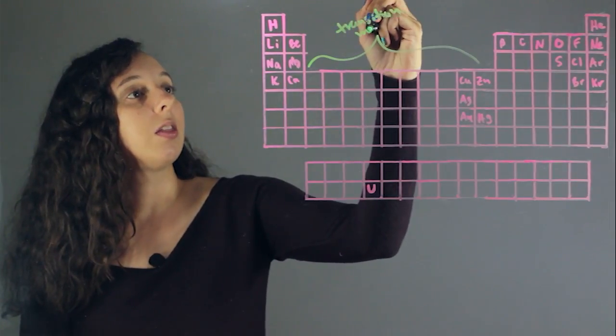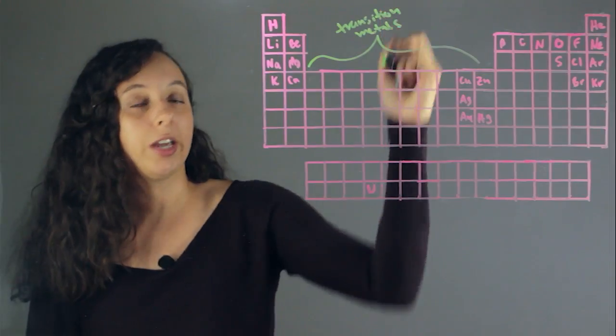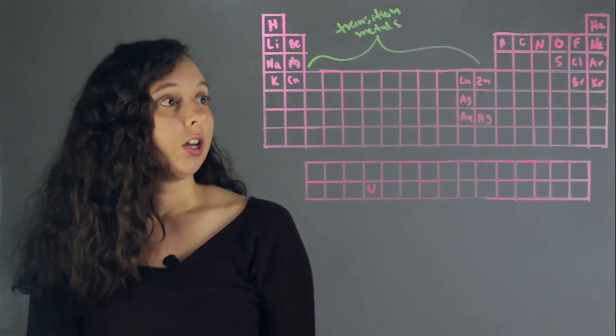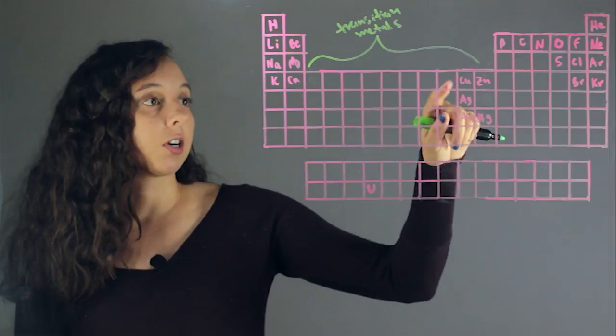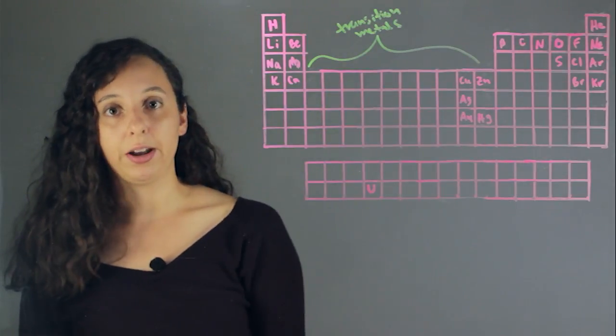And these are all the metals that we kind of associate in everyday life with being metal. So you have zinc, mercury, gold, silver, copper. These are all in the transition metals.